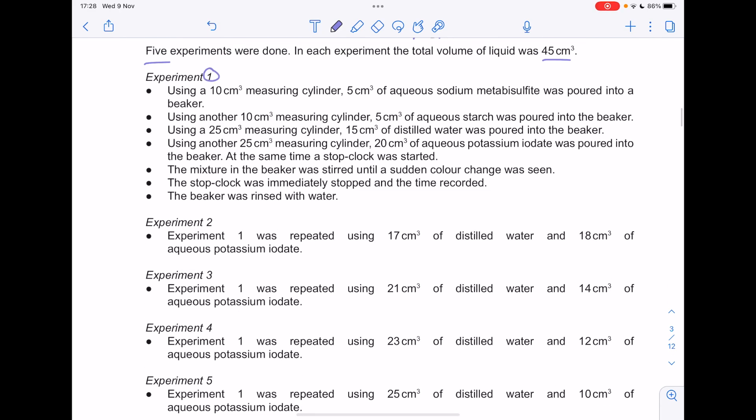In experiment one, we used a measuring cylinder to measure out 5 centimetres cubed of the sodium metabisulfite. Then we measured out 5 centimetres cubed of aqueous starch. 15 centimetres cubed of distilled water was added. And then 20 centimetres cubed of aqueous potassium iodide was added. Then the stop clock was started. And the mixture in the beaker was stirred until a sudden colour change was seen.